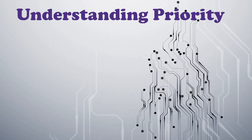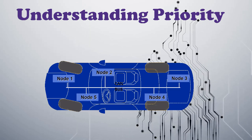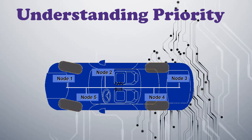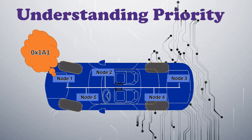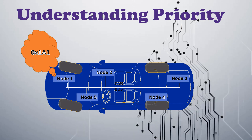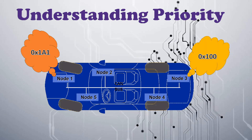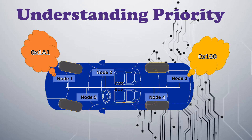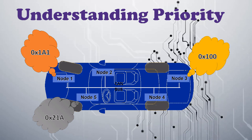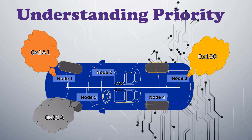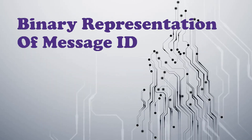For that, we can take this CAN bus for our reference. Here, node 1 wants to send a message with message ID 0x1a1, node 3 wants to send a message with message ID 0x100, and node 5 wants to send a message with message ID 0x21a1. To understand which one will have the highest priority, we can refer to the binary representation of these message IDs.